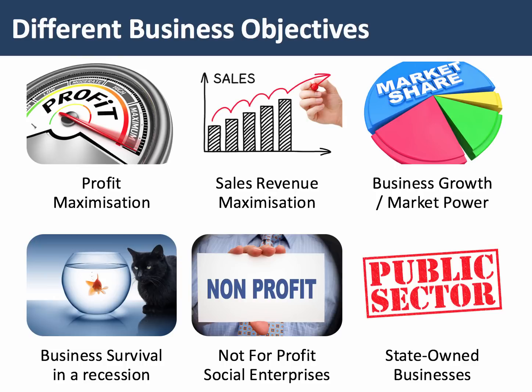We know that businesses have many different objectives, and businesses may pursue multiple objectives at any given moment in time. The standard assumption of neoclassical economics is that businesses are maximisers, choosing a pricing and output which maximises profit. But the reality is often very different.